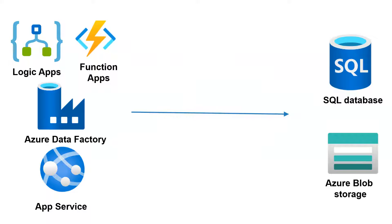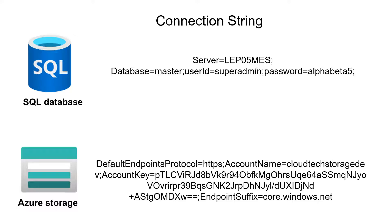Let's say you have hosted your .NET application inside an Azure App Service, or you are currently working on Azure Data Factory or Logic App which needs to connect with Azure SQL or Azure Storage Account. If you want to interact with SQL, you will be using the connection string by providing server name, database name, user ID, and password. Similarly, for Azure Storage Account you will be using the access keys in order to connect.